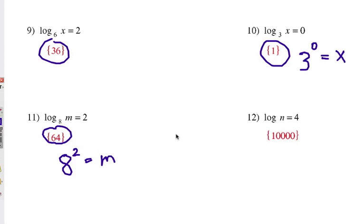Writing from log form into exponential form. If you don't have a base showing, what is that? That's right, that's base 10. So 10 to the 4th power equals the n we're looking for. 10 times 10 times 10 times 10, or a 1 with 4 zeros, is 10,000.